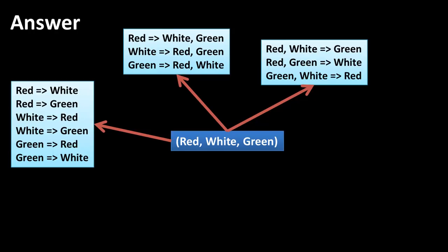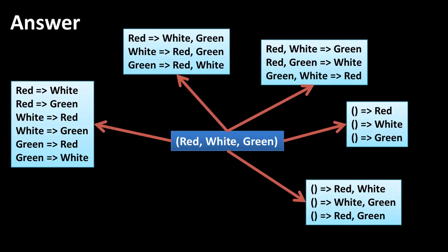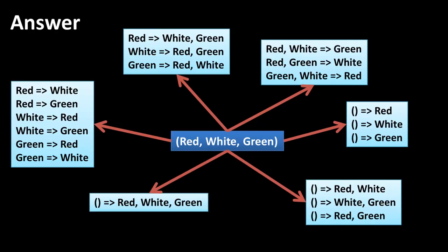But actually it is also possible for the antecedent to be empty. Why does it make sense to consider an empty antecedent? Well, it is not that you want to recommend items only for those who have purchased other items. What about somebody who has not purchased any item? You could still make a recommendation for them. So it is possible to consider an empty antecedent, and therefore we now have more rules — empty antecedent implies red, empty antecedent implies white, etc. So a single transaction which has only three different items can imply so many rules.